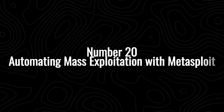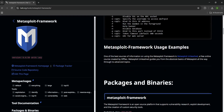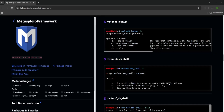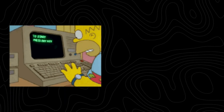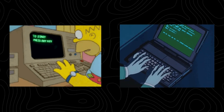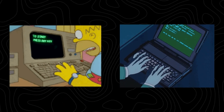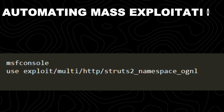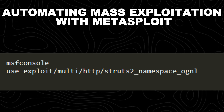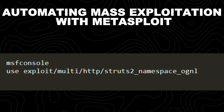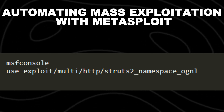Number 20: automating mass exploitation with Metasploit. Metasploit is one of the most powerful frameworks for automating vulnerability exploitation. Instead of manually identifying and exploiting individual targets, you can automate mass exploitation across multiple systems, saving time and increasing efficiency. These commands are used in the Metasploit framework to launch an exploit targeting the Apache Struts2 OGNL injection vulnerability, which allows remote code execution on affected servers.